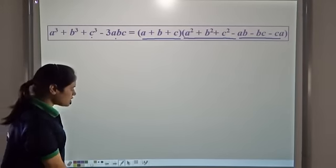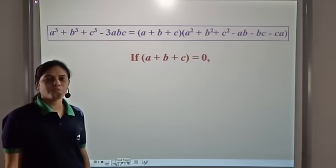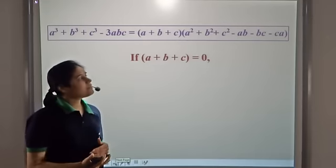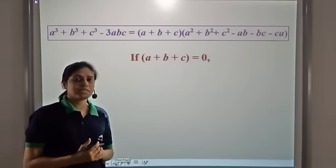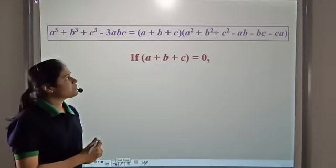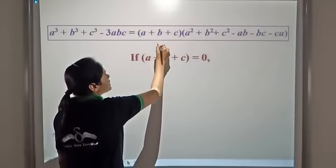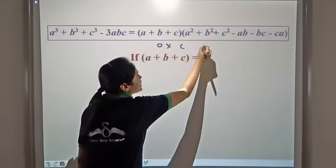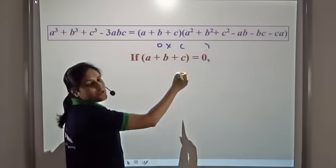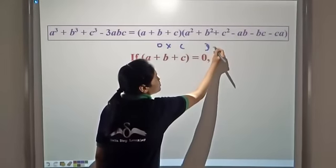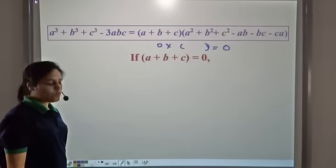Now what happens if a plus b plus c is equal to zero? In some cases we might have a plus b plus c equal to zero. Then this right-hand side will be zero into this entire expression, and zero into anything will be zero. So this entire right-hand side will be equal to zero.